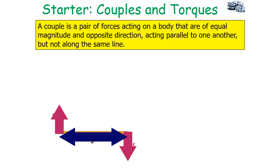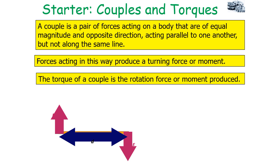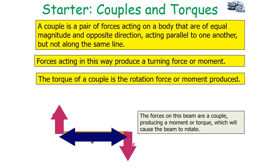A couple is a pair of forces acting on a body that are of equal magnitude, in opposite directions, acting parallel to one another but not along the same line. Forces acting in this way will produce a turning force or a moment. The torque of a couple is the rotational force or moment produced. The forces on the beam shown here are a couple and will produce a moment or torque which will cause the beam to rotate.